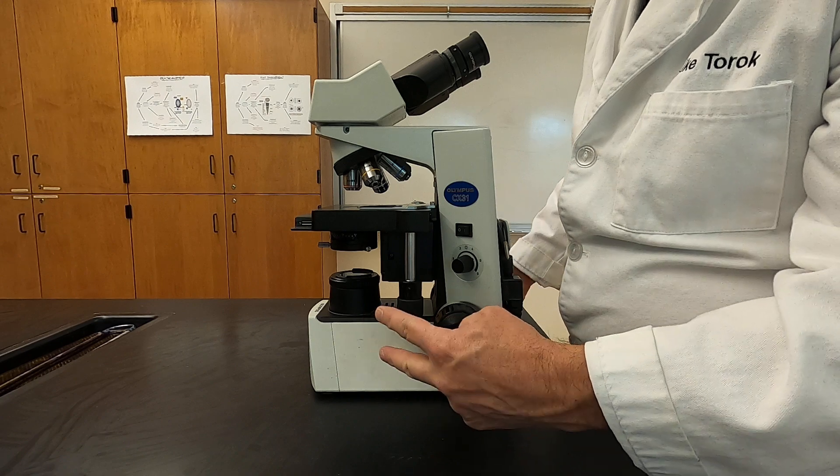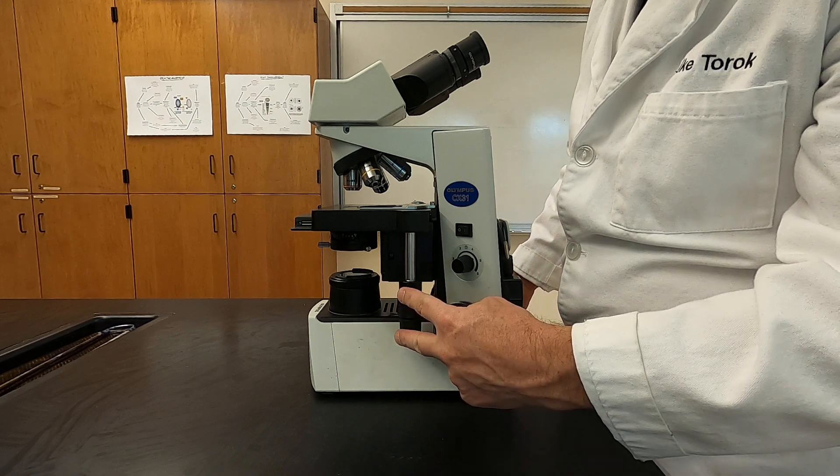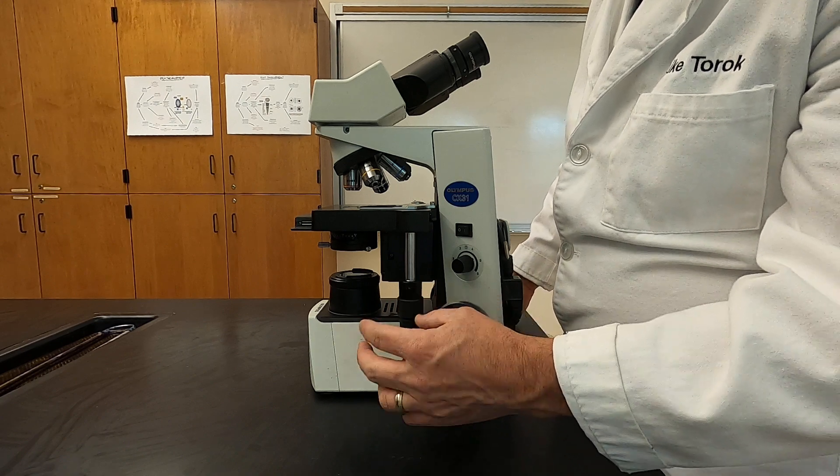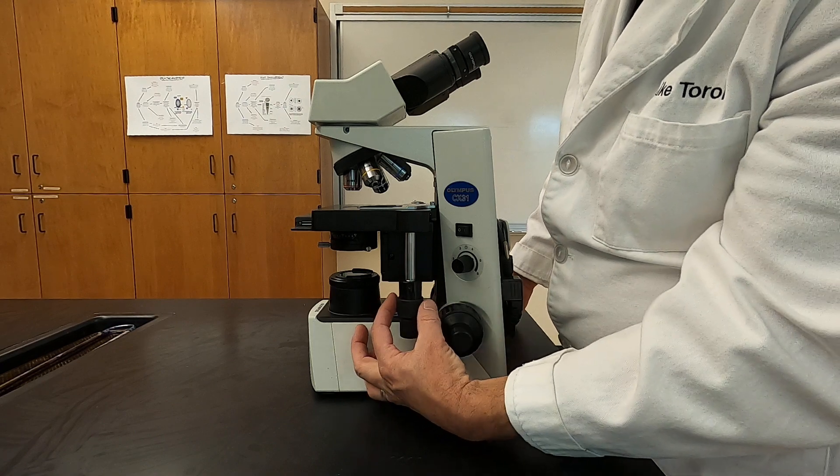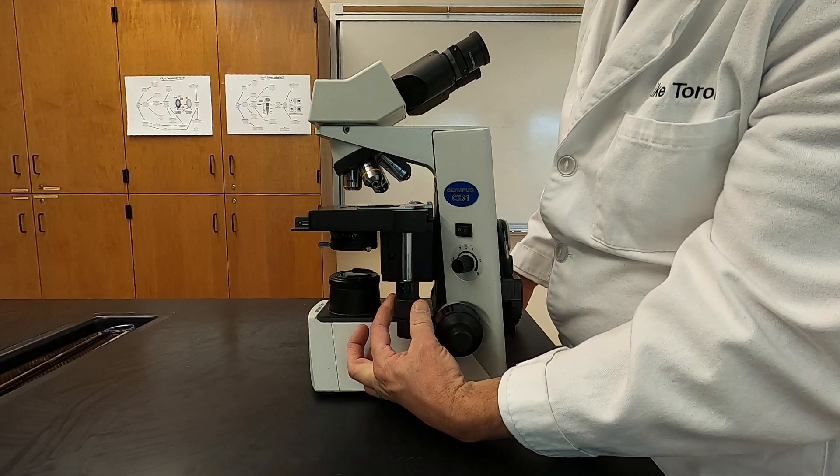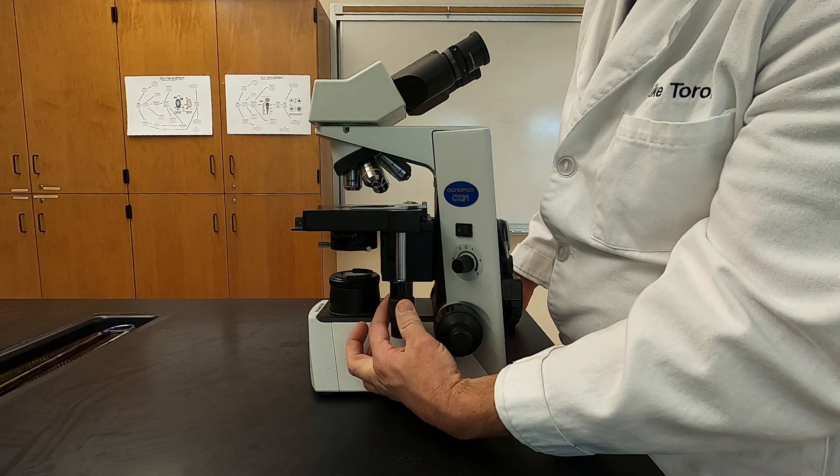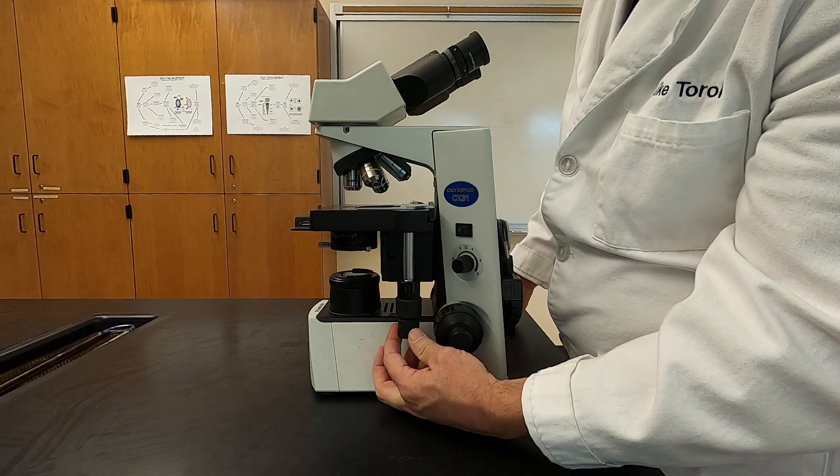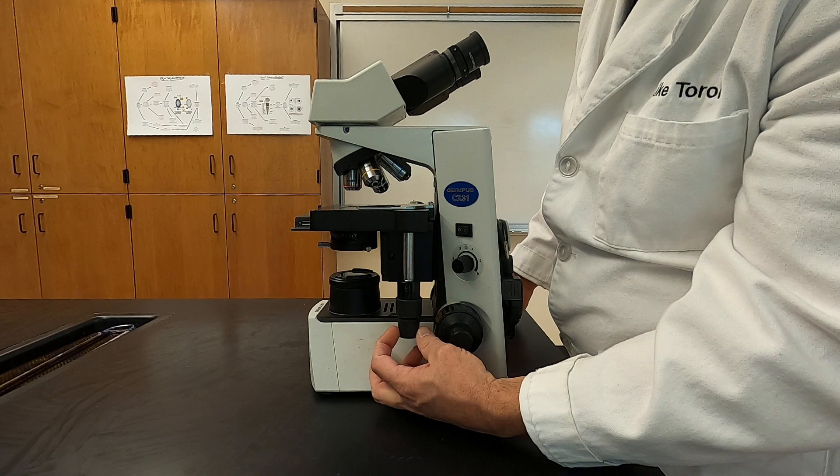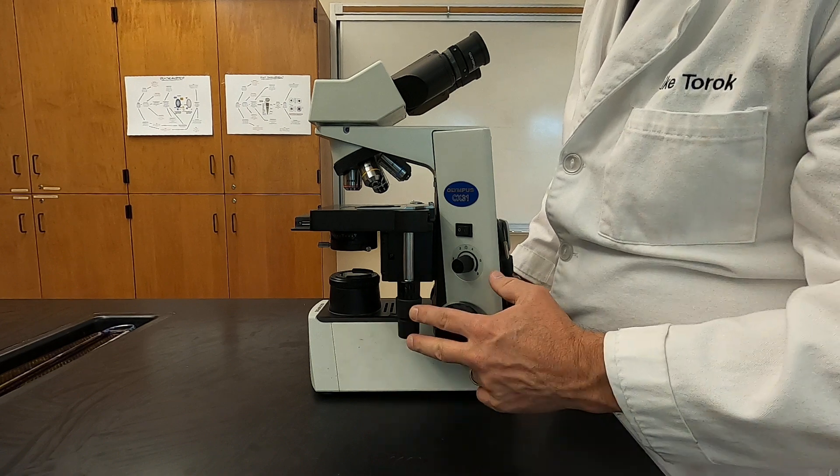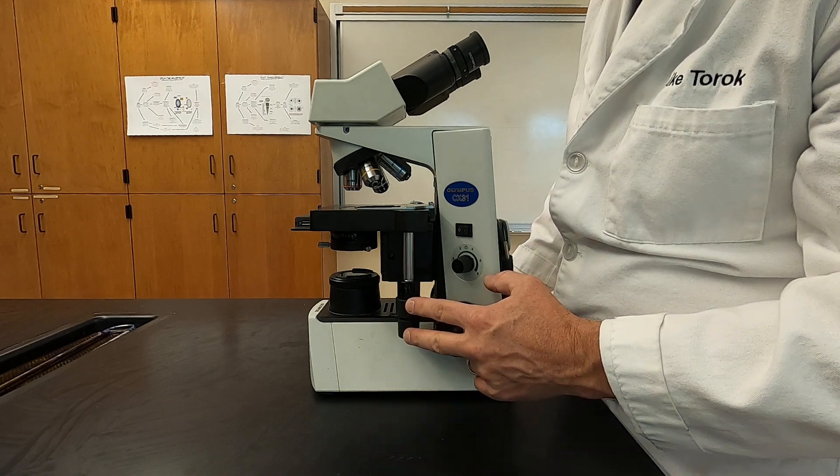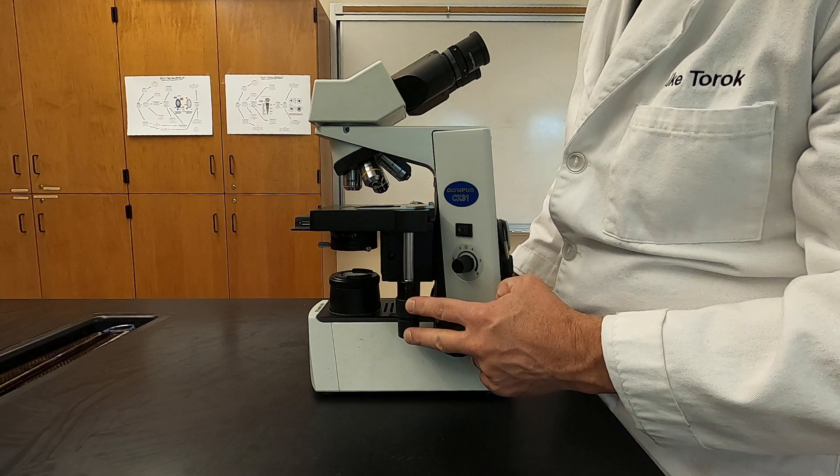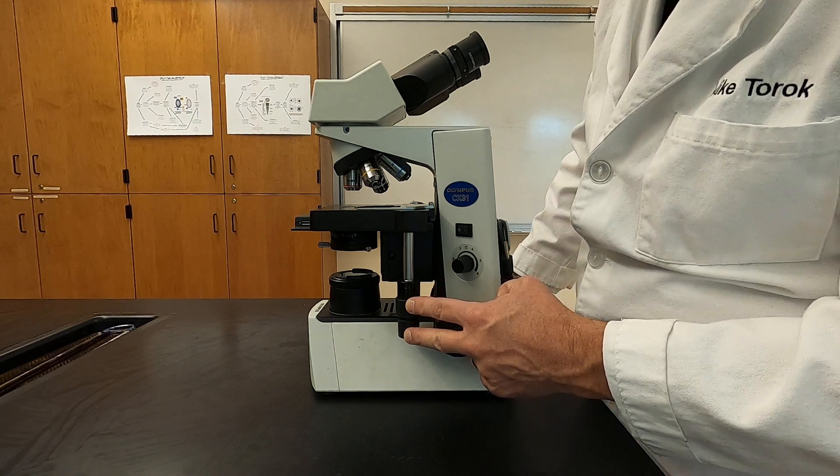You also have two stage controls here. The top stage control is this ring, and when you turn it, it moves the stage forward and back. When you turn this ring on the bottom, it moves your slide clip left and right. So using a combination of these two things, you will be able to move the slide anywhere on the stage.